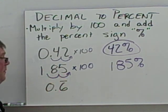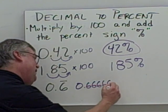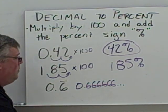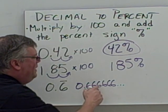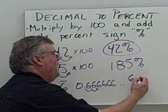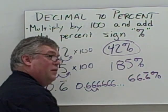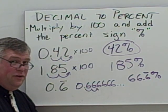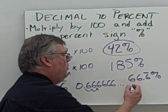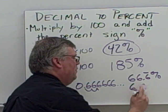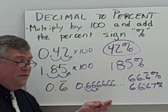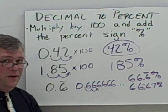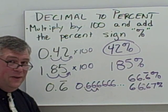Moving two decimal places over — here I've got 0.6 repeating, which is 0.666666 and so on. When I multiply by 100, I move the decimal one, two places, giving me 66.6666 repeating. I can write that as 66.6 repeating percent. You need to show at least two decimal places, so 66.67% would be an acceptable rounded value. Never round to the nearest whole number unless specifically told to do so.